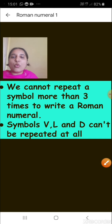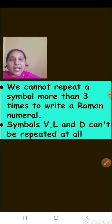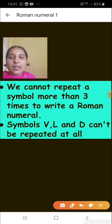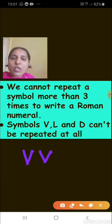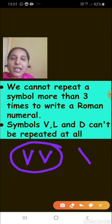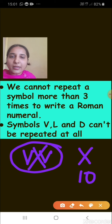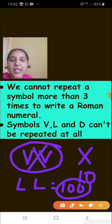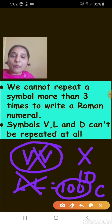Rule 2: symbols V, L, and D cannot be repeated at all. You cannot write number 10 as VV, because we already have the symbol X which represents 10. Similarly, LL would give you 100, but for representing 100 we already have C. So we cannot repeat the symbols V, L, and D at all.